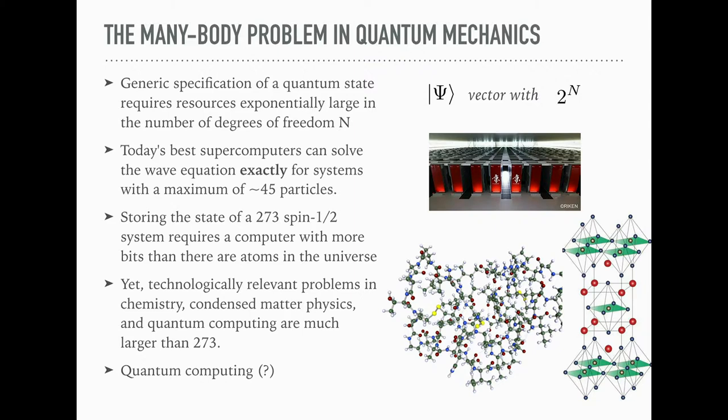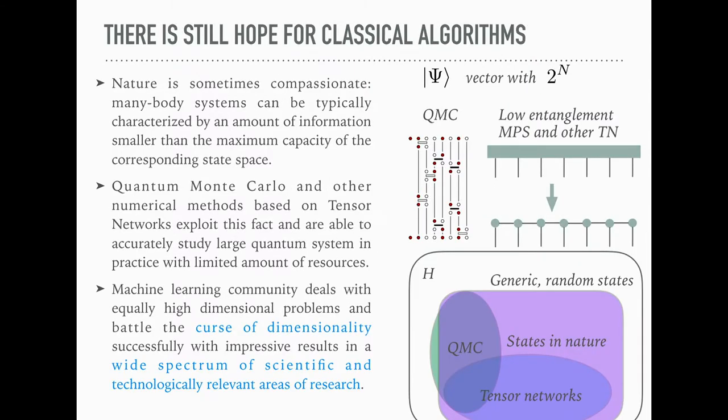Just to emphasize how tough these problems are: for storing the wave function of a 273 spin one-half system, you require computers with more bits than there are atoms in the universe. But we're interested in problems that are even bigger, and they're relevant in chemistry and condensed matter and quantum computing. We have quantum computing which may help us solve some of these problems, but that's still under development. We still have to rely on classical algorithms.